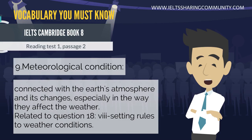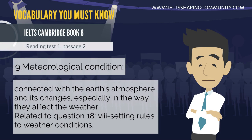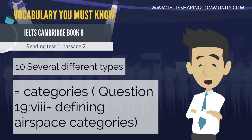9. Meteorological condition — connected with the Earth's atmosphere and its changes, especially in the way they affect the weather. 10. Several different types equals categories; related to question 19: defining airspace categories.